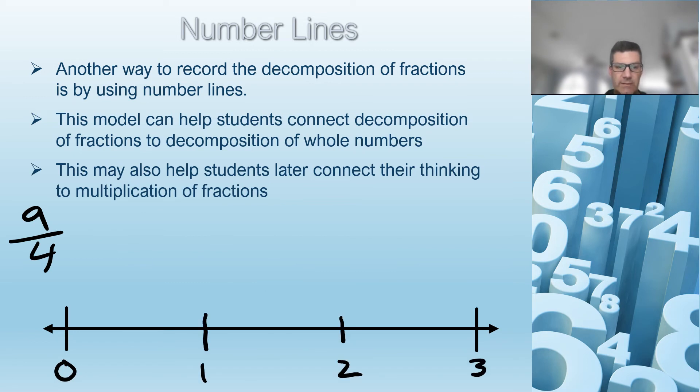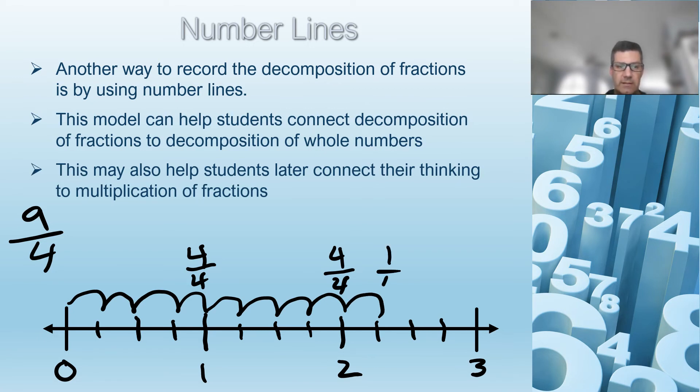Coming back to our fourths. Here's that connection to one, two, three, four-fourths is one whole. Another four-fourths gets to our second whole. We've made two wholes and eight-fourths. We need one more fourth. So four-fourths plus four-fourths plus one-fourth is the same as nine-fourths.